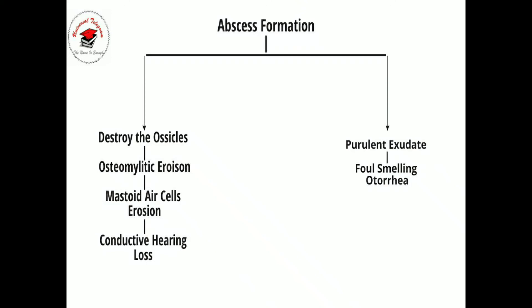This ultimately leads to various complications of CSOM. As you can see, abscess formation leads to two complications: first, destruction of ossicles, and second, purulent exudate. Destruction of the ossicles leads to osteomyelitic erosion, which leads to mastoid air cell erosion and ultimately conductive hearing loss. Purulent exudate leads to foul-smelling otorrhea. This completes the pathophysiology of CSOM.